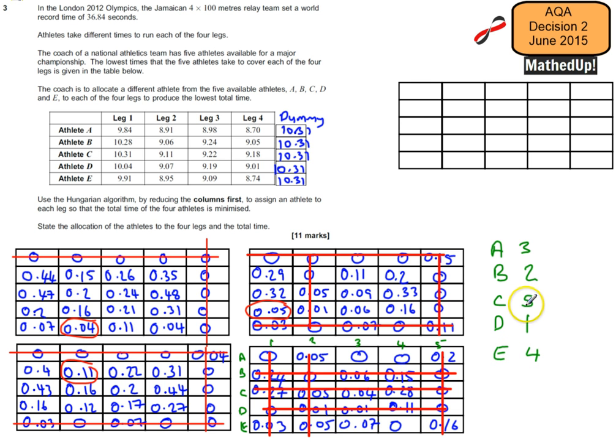Now, 5, column 5, was our dummy column, so that means that I'm going to, I'll just write next to it that that's our dummy. So my actual allocation is not going to include that one there. So I've got A3, B2, D1, and E4.